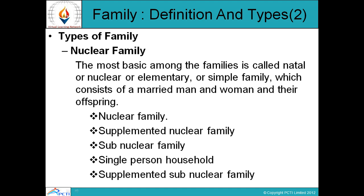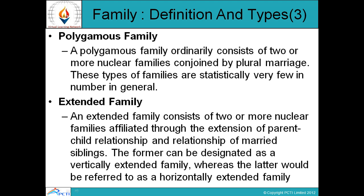However, in terms of social norms and values, these types relate to the joint family system. Nuclear families are often combined like atoms in a molecule into larger aggregates. Such families are generally referred to as composite forms of family and on the basis of their structural characteristics, they can be differentiated into two distinct types: polygamous and extended family. The polygamous family ordinarily consists of two or more nuclear families conjoined by plural marriages. These types of families are statistically very few in number. There are basically two types of polygamous families based on the form of marriage: polygyny, that is one husband with more than one wife at a time, and polyandry, that is one wife with more than one husband at the same time.